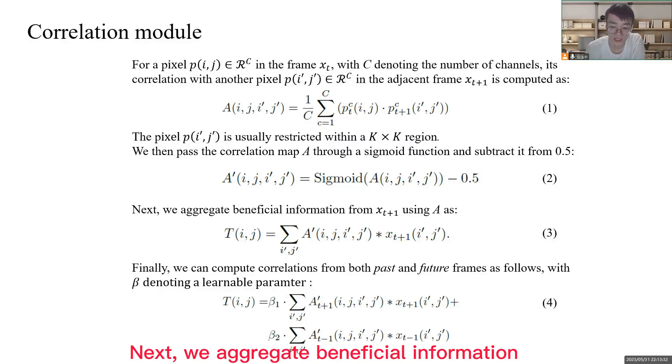Next, we aggregate beneficial information from x_{t+1} using A in equation 3. Finally, we can compute the correlations from both past and future frames in equation 4, with beta denoting a learnable parameter.